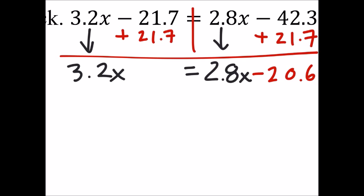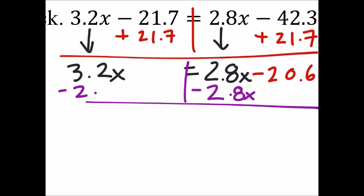Now we've got this 2.8x, which is on the wrong side as well. So we'll have to subtract that from both sides. And that gives us 0.4x equals negative 20.6.